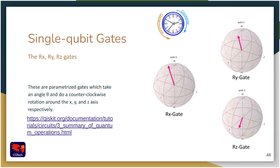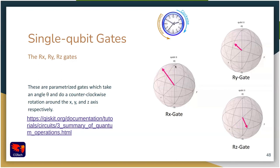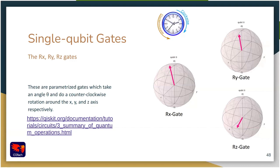Now let's look at the Rx, Ry, and Rz rotation gates. These are gates that do counterclockwise rotation around the X, Y, and Z axes respectively. For example, the Rx gate rotates around the X axis, Ry around the Y axis, and Rz around the Z axis. The angle of the rotation is a parameter that you get to pick — this is why Rx, Ry, Rz and some other gates are called parameterized gates. There is a link to more gates available on Qiskit, but these are the most commonly used ones.